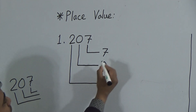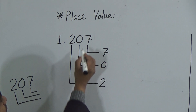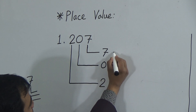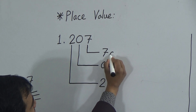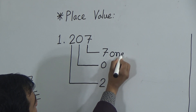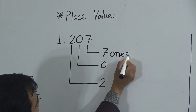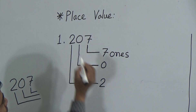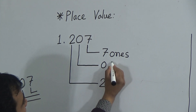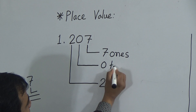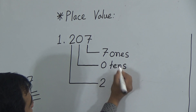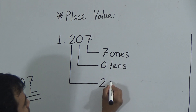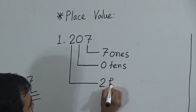My dear students, the first digit from the right side — this 7 — is in the 1's position, that means 7 ones. This 0 is in the 10's position, so 0 tens. And this 2 is in the 100's position, so 2 hundreds.